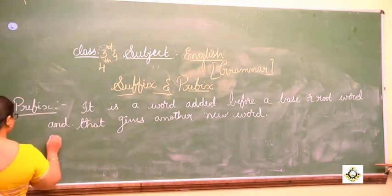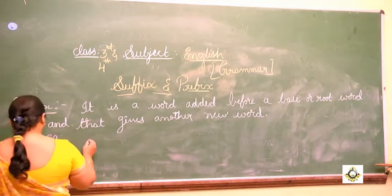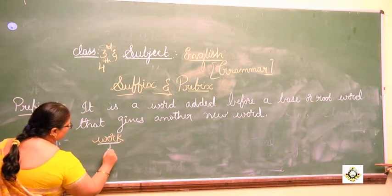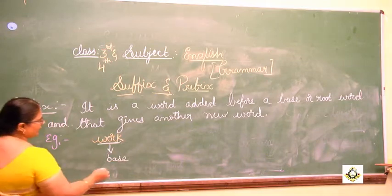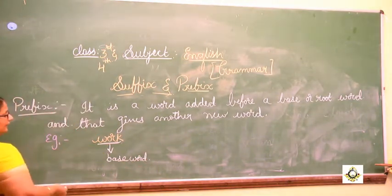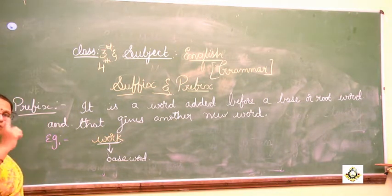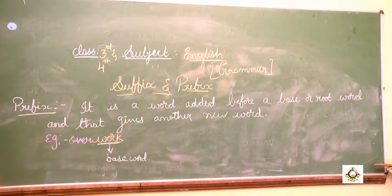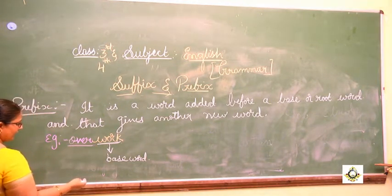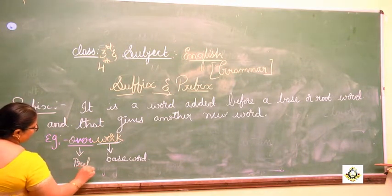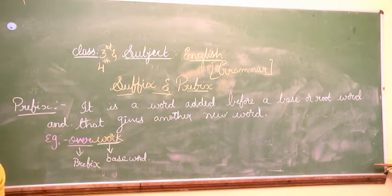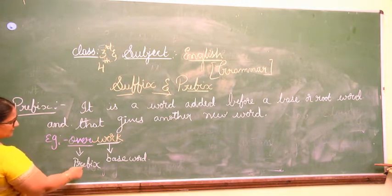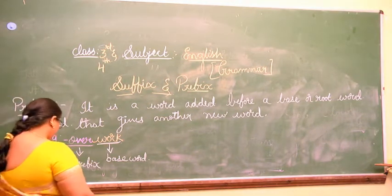You can understand it better with examples. I have the word 'work' as the base word. If I add 'over' before this base word, it becomes 'overwork'. So 'over' is called a prefix. It was exactly the opposite in the case of suffix — but here you add the prefix before the base word.